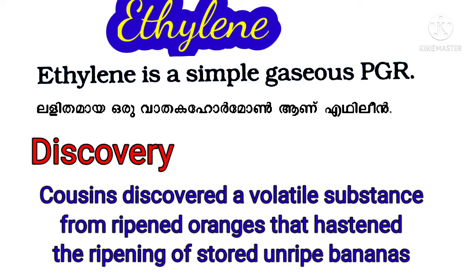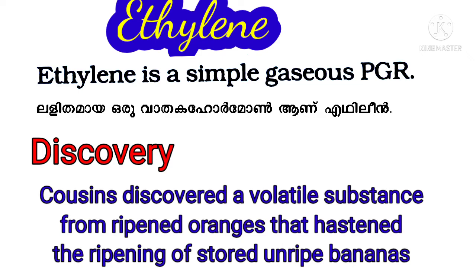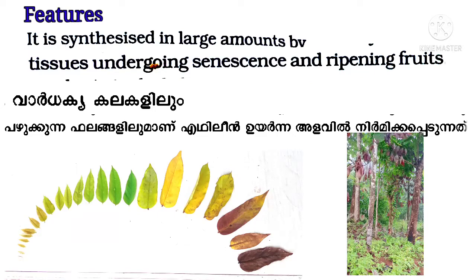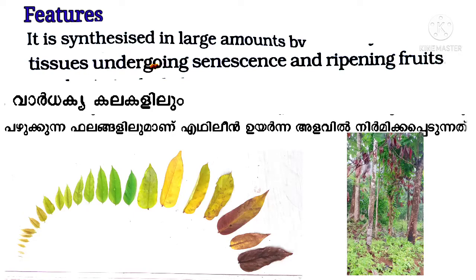Cousins discovered a volatile substance from ripened oranges that hastened the ripening of stored unripe bananas. Ethylene is synthesized in large amounts by tissues undergoing senescence and ripening of fruits.